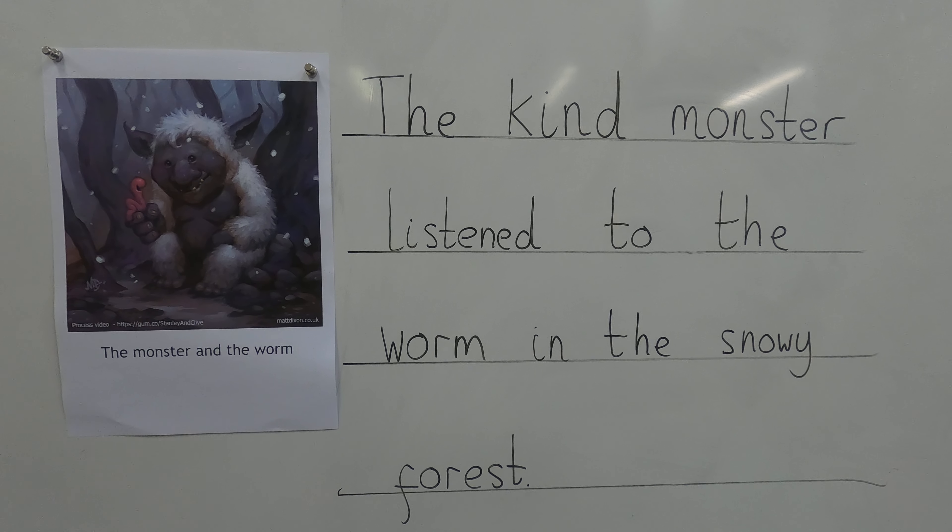How could we make that sentence better? We put 'kind monster' but we didn't put anything to describe the worm. Let's describe the worm — what's the worm saying? The monster's laughing. So the worm could be telling a joke, and if he's telling a joke, he must be funny. So: the kind monster listened to the funny worm in the snowy forest. Excellent.